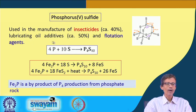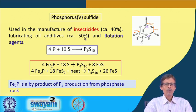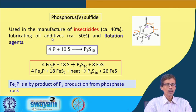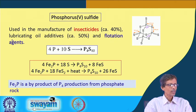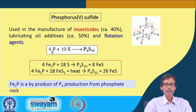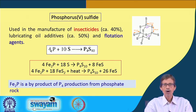Similarly, lubricating oil additives account for the next 50 percent of the production of phosphorus pentasulfide — also written as P₂S₅ or P₄S₁₀. The remaining 10 percent is used as flotation agents. We will see how these lubricating oil additives can be prepared, and whether we can use P₄S₁₀ directly or require some other modifications.